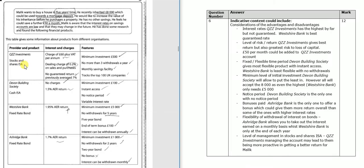Bearing in mind the information we have here, we can see that we've got a stocks and shares ISA, a cash ISA, a fixed rate bond, and another fixed rate bond, with the different interest rates and the different features of each of these.